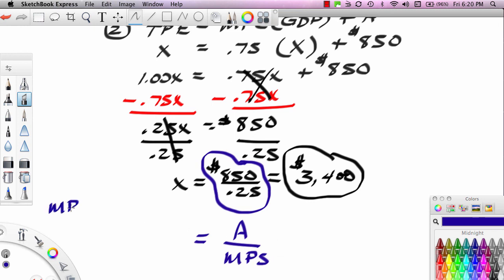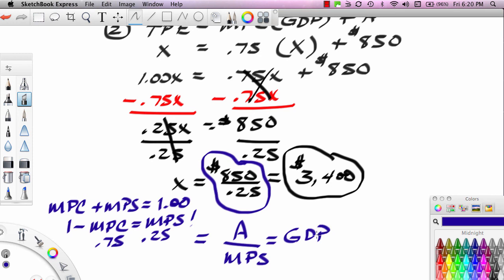Remember, MPC plus MPS must equal 1. So therefore, 1 minus MPC equals MPS. If we have MPC, 0.75, we have MPS, 0.25. So A divided by MPS, 850 divided by 0.25, gives us equilibrium GDP. And that's the operative formula.